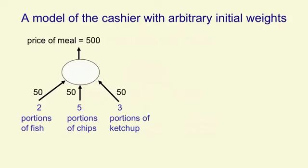Let's suppose that we start with guesses that each portion costs 50. So for the meal with 2 portions of fish, 5 of chips, and 3 of ketchup, we're going to initially think that the price should be 500. That gives us a residual error of 350. The residual error is the difference between what the cashier says and what we think the price should be with our current weights.